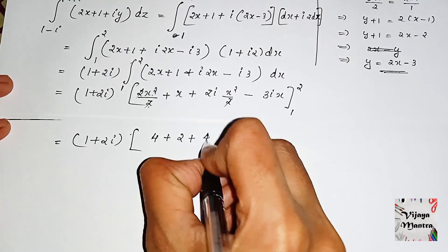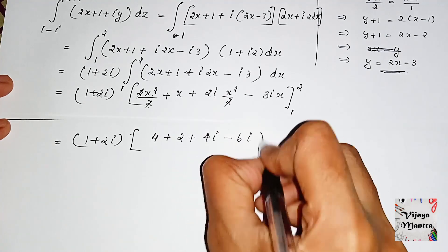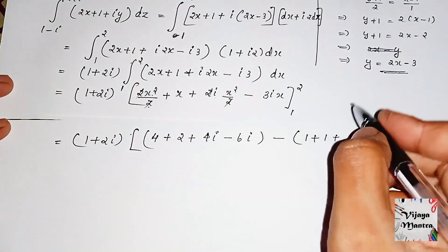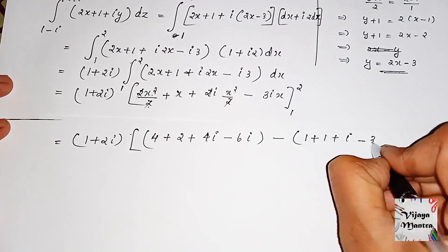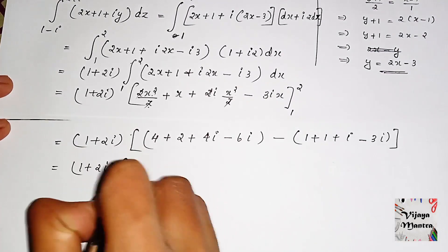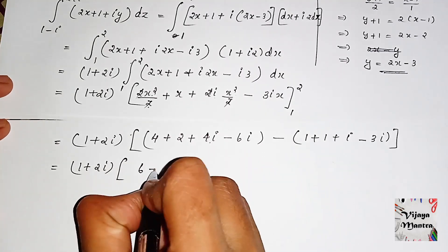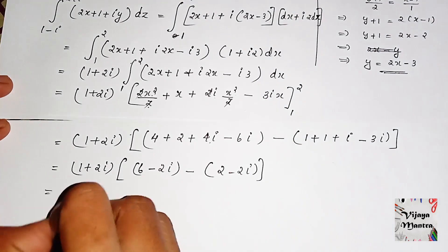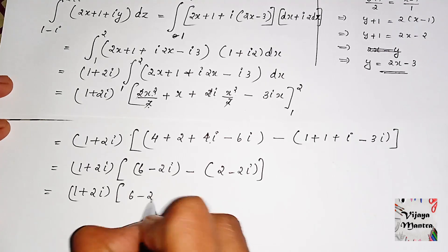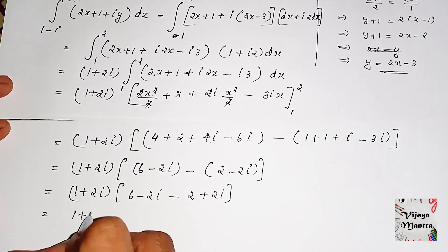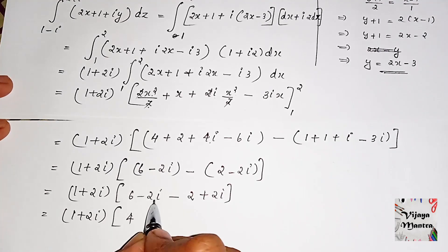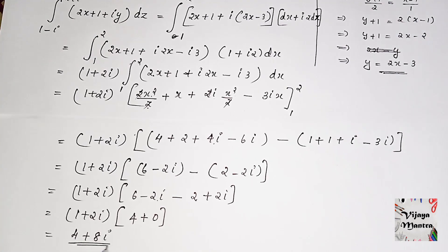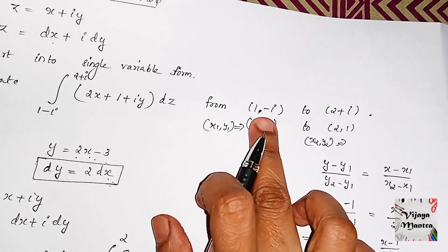Evaluating from 1 to 2: upper limit x=2 gives x-squared as 4, and lower limit x=1 gives x-squared as 1. Simplifying: 1 plus 2i into (4 plus 2 plus 4i minus 6i) minus (1 plus 1 plus i minus 3i) equals 1 plus 2i into (6 minus 2i) minus (2 minus 2i). This equals 1 plus 2i into 4, giving the final answer of 4 plus 8i.